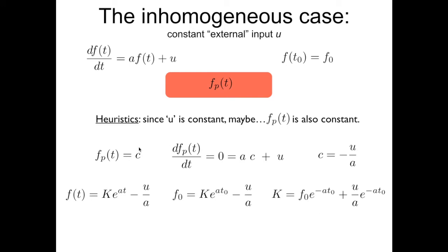And identifying the constant by replacing t with t0 and f of t with f0, like I'm showing here, would allow to express k in function of all the other terms. And finally, plugging k here and rearranging slightly the terms leads to the final solution of the non-homogeneous differential equation in the case where the non-homogeneous term is a constant, and the constant is u.